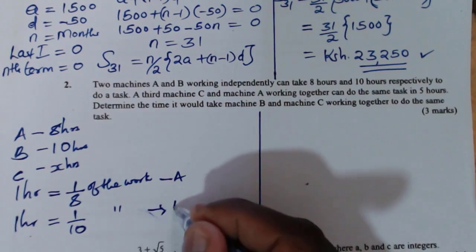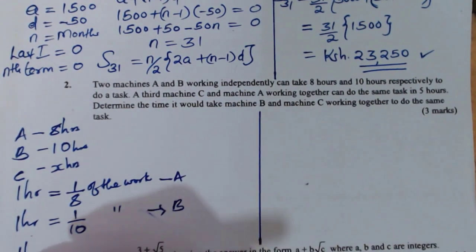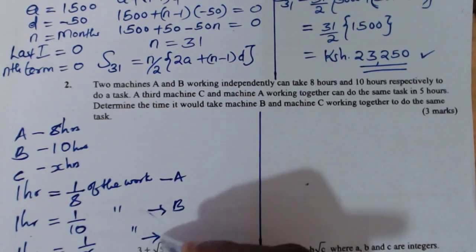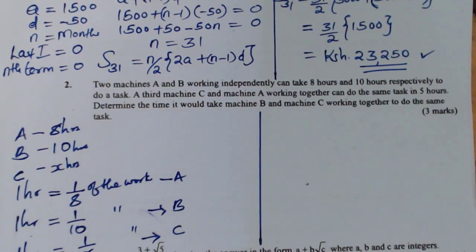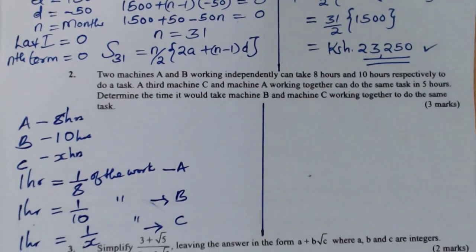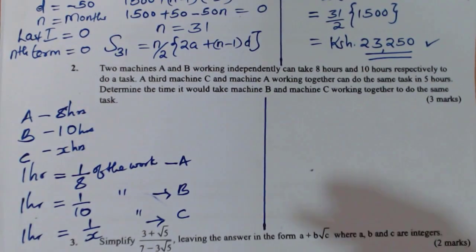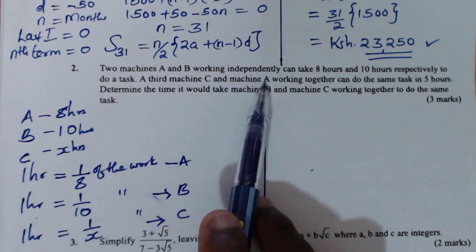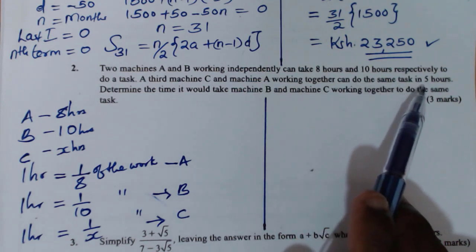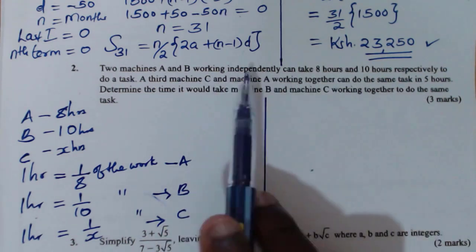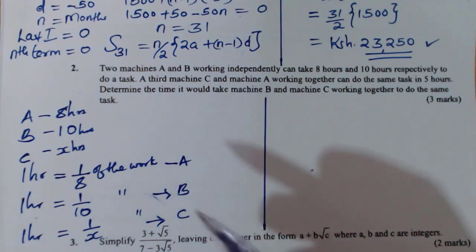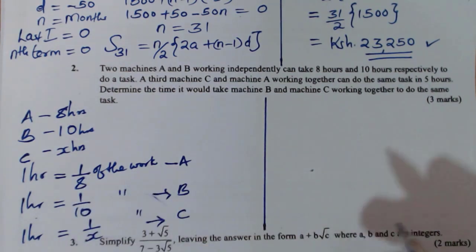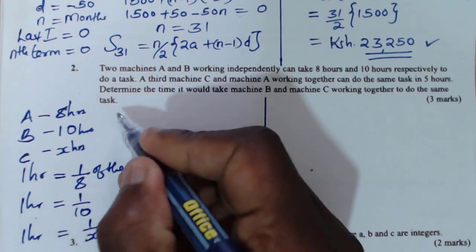For machine C, in one hour it will do one over X of the work. Now having these, we'll be able to work out easily. We're given that machine C and machine A working together can do the same task in five hours. So for C and A — A in one hour will do one over eight of the work.